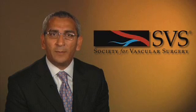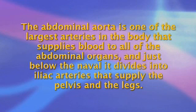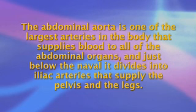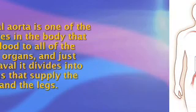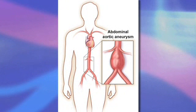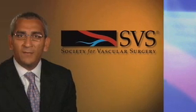An aneurysm is a progressive weakening and ballooning of a blood vessel in the body. The abdominal aorta is one of the largest arteries in the body that supplies blood to all of the abdominal organs, and just below the navel it divides into iliac arteries that supply the pelvis and the legs. An abdominal aortic aneurysm is a weakening and dilatation of the abdominal aorta that, if undiagnosed and untreated, can lead to aneurysm rupture resulting in catastrophic internal bleeding and death. Vascular surgeons are the specialists involved in caring for and treating patients with abdominal aortic aneurysm and other diseases affecting the arteries and veins in the body.